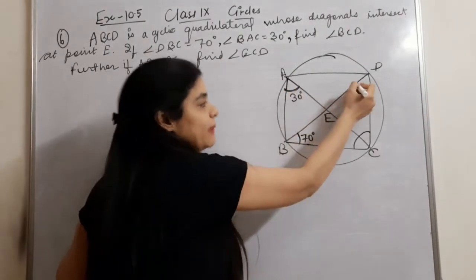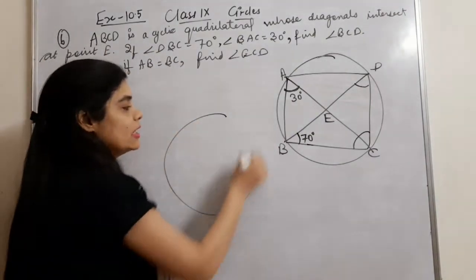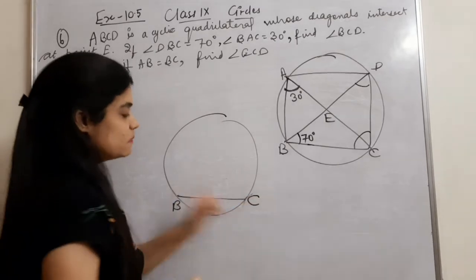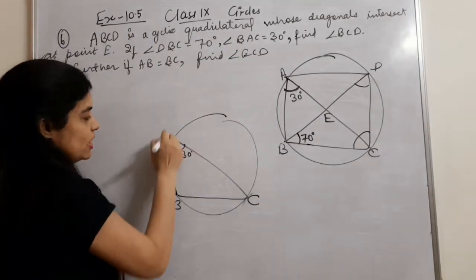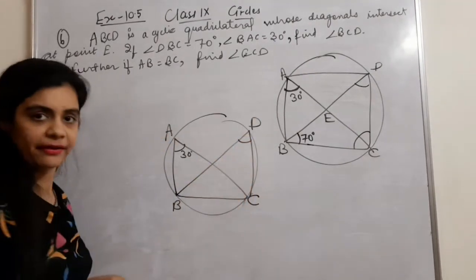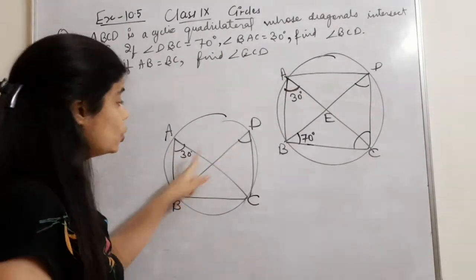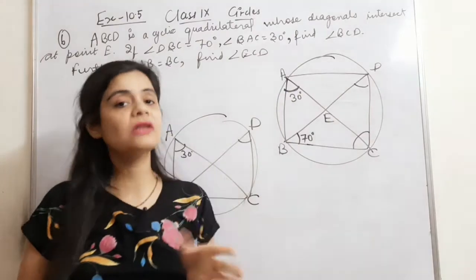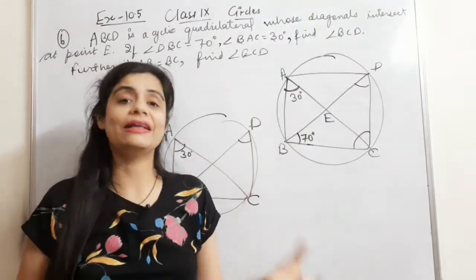This angle is 30 degrees and this is also 30 degrees. Why? Angles in the same segment. The arc BC subtends two angles — both are angles in the same segment, so they are equal.